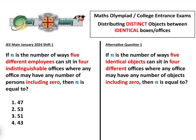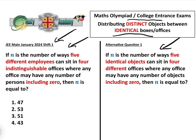Today we're going to be doing distributing distinct objects into identical boxes or offices. This is the question we're going to be looking at from the JEE Main January 2024 Shift 1. I can assure you that most people get this wrong, and the reason why they get it wrong is because they think they're answering something else.